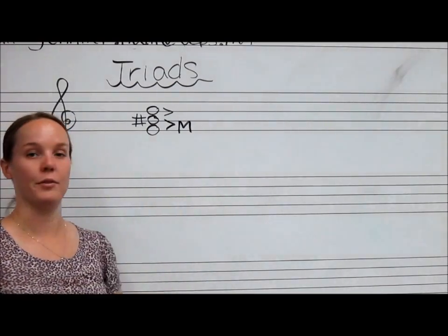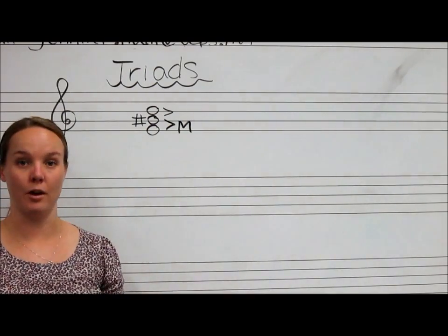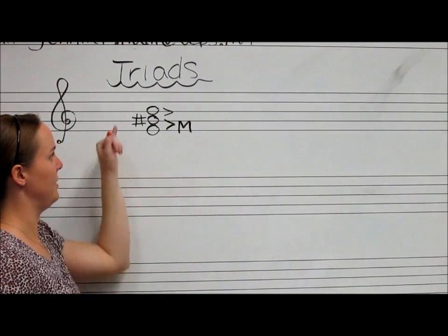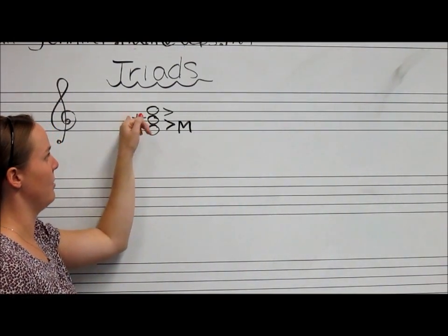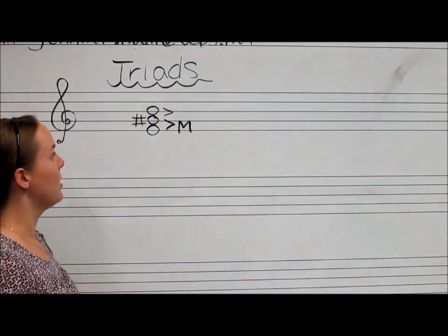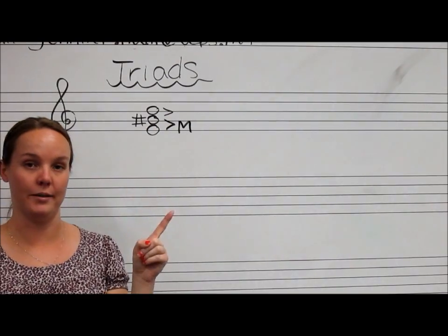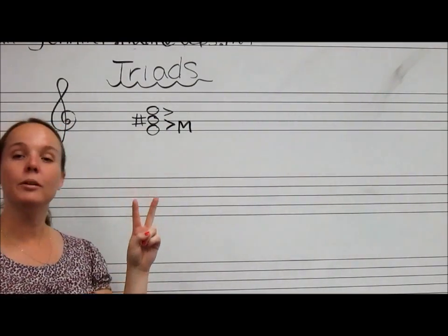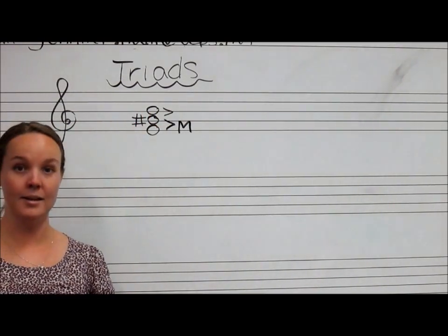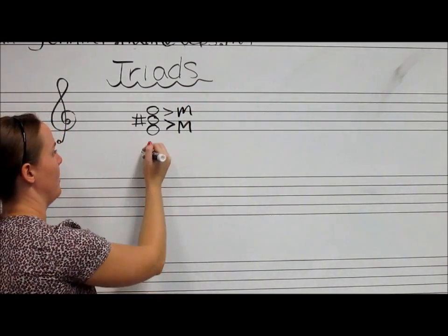Now we just need to look at the top interval to figure out if it's major or augmented. If it's going to be a major triad, we need this to be a minor third; if it's augmented, this would be a major third. Counting half steps: G sharp to A is one, A to A sharp is two, A sharp to B is three half steps — so we have the interval of a minor third on top, which makes this whole triad major.